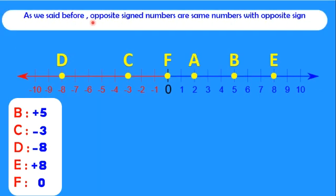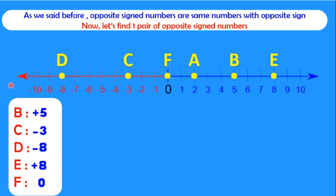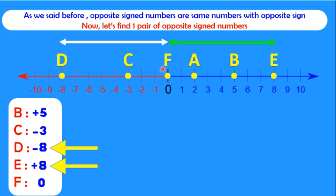As we said before, opposite signed numbers are same numbers with opposite sign. So let's find here two opposite numbers. Here plus 5, minus 3, minus 8, plus 8, and zero. Yes, as you notice here, same numbers, 8 and 8, but different signs. And notice that the distance from zero to D is equal from zero to E. Why? Because they are opposite signed numbers.